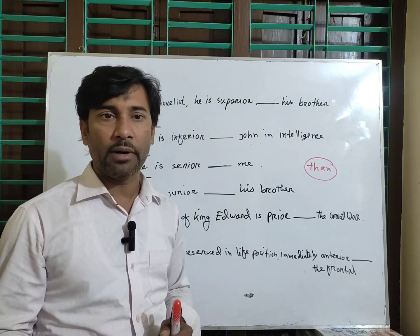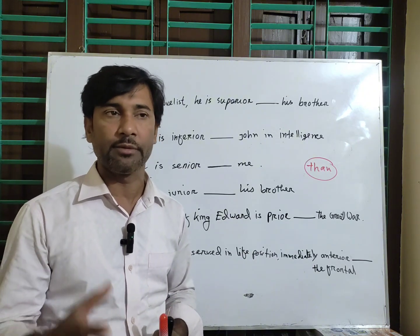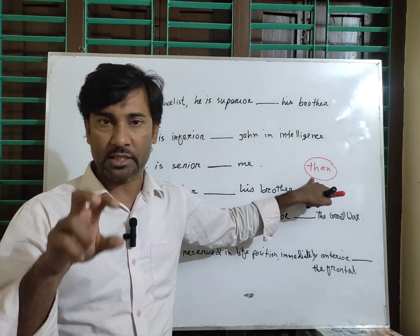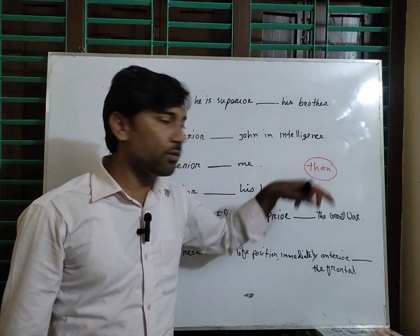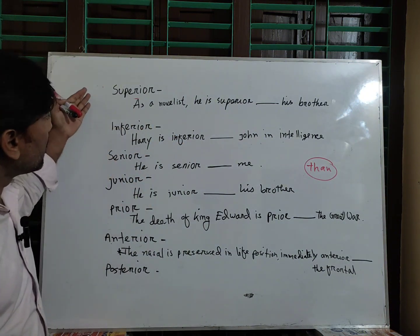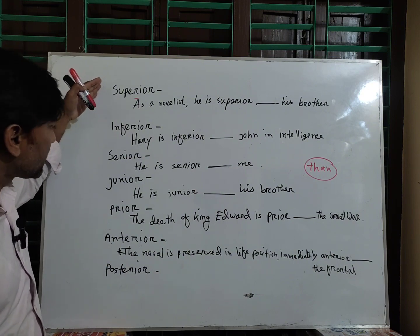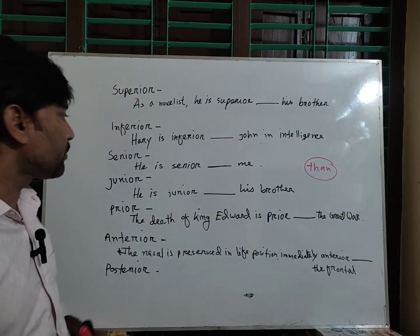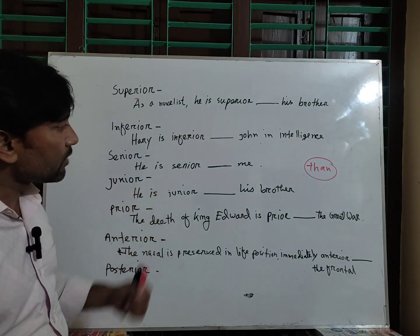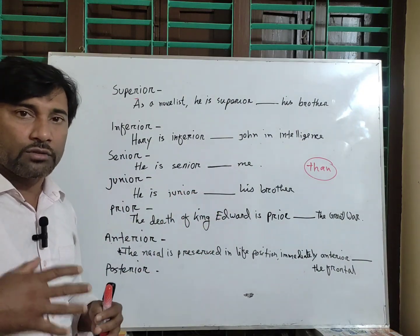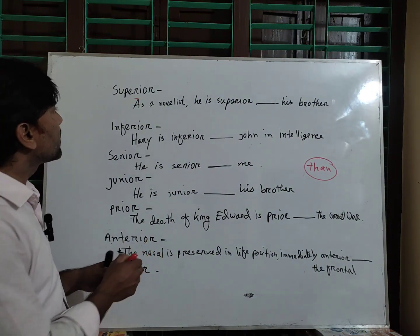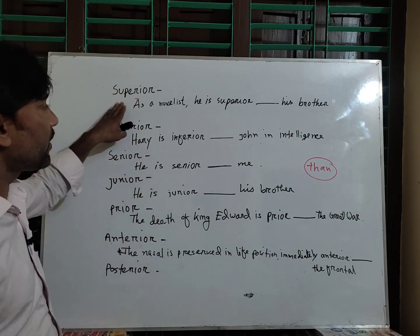This is positive, comparative and superlative degree. Now the exception: after Latin comparative, we don't put 'than'. After Latin comparative, we don't put 'than'. Remember that after Latin comparative we don't put 'than'.